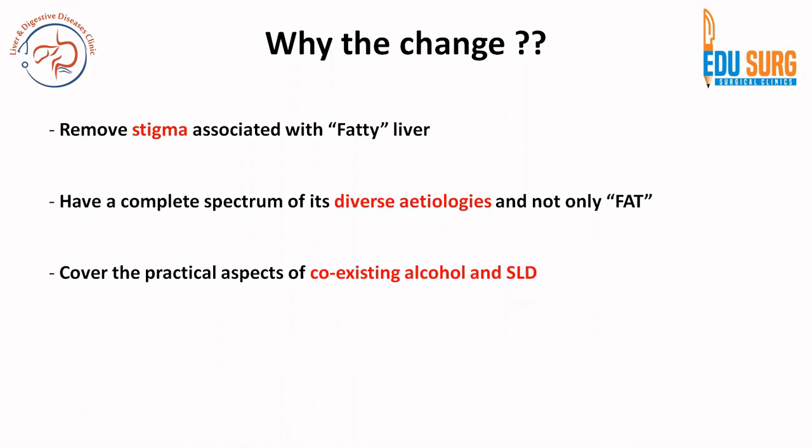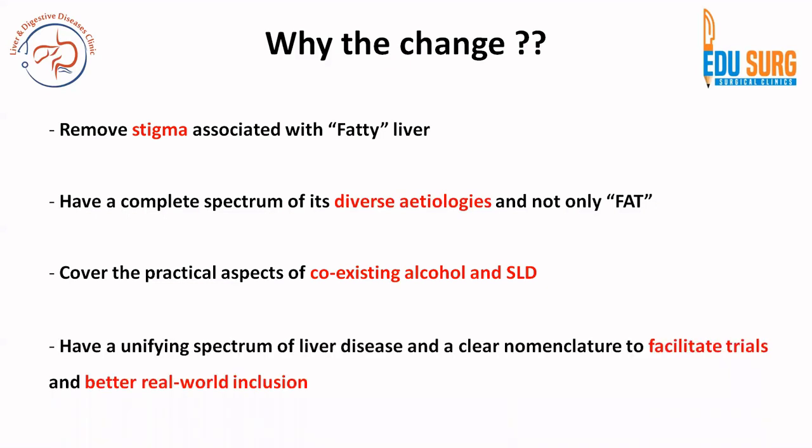This spectrum also covers the aspect of co-existing alcohol and fatty liver, which is very important because practically it is routinely seen in clinics that these patients have multiple risk factors. Having a unifying spectrum of liver disease with a clear nomenclature facilitates inclusion criteria, enables more real-world data collection, and supports trials for drug development.